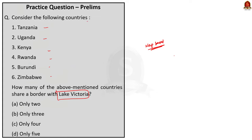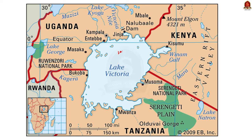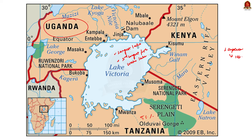Lake Victoria is Africa's largest lake by area, the world's largest tropical lake, and the world's second largest freshwater lake by surface area. The first largest freshwater lake by surface area is Lake Superior in North America. Coming back to the question, it is bordered by only three countries: Tanzania with 51% of coverage, Uganda with 43%, and Kenya with a mere 6% of the border.